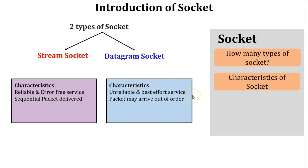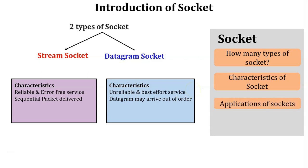Datagram socket characteristics are unreliable and best-effort service. Unreliable means lost or damaged datagrams are not resent by the sender. Best-effort service means all datagrams reach the destination within a small period of time. Another characteristic of datagram socket is that datagrams may arrive out of order, since no sequence numbers are assigned and all datagrams are put on the network link simultaneously.